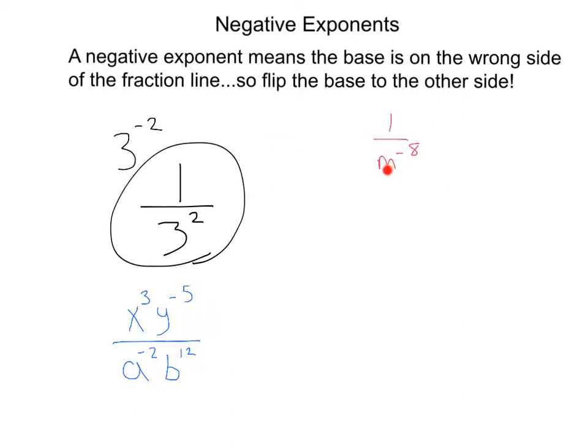Let's go over to 1 over m to the negative 8. Again, let's flip it to the other side: m to the 8 over 1. We don't have to write that. And there's our answer. We just put that to the top of the fraction and made the 8 positive.